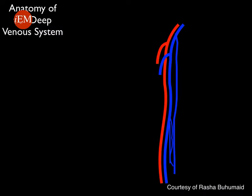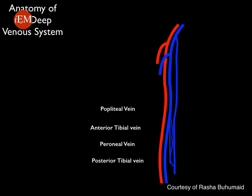Let's review the anatomy of the deep venous system. The deep venous system includes the anterior tibial vein, posterior tibial vein, and the peroneal veins, collectively known as the calf veins. These calf veins join together at the level of the knee to form the popliteal vein, which extends proximally to become the femoral vein at the adductor canal.